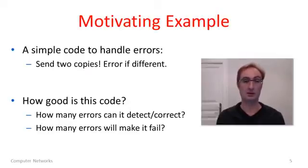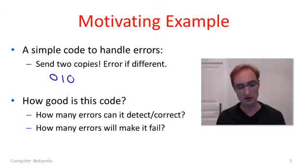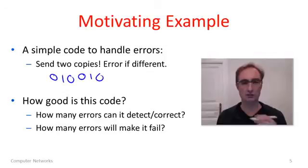To warm up to some of these codes, we'll start with a motivating example. So here's a simple code that we could use to handle errors. Got a brilliant idea. You ready for it? Here it is. Send two copies. It's just an error if they're different. I hope no one's patented that. So here's our example. Here is the message 010 and we're simply going to send another copy. We'll send it again back to back 010. Great. Actually, let's not rush out and patent it before we think about how good this code is.